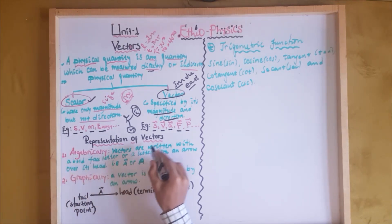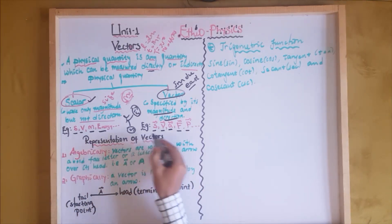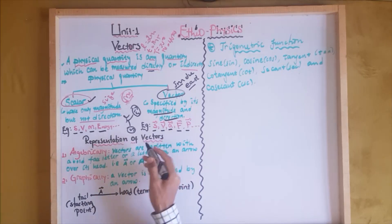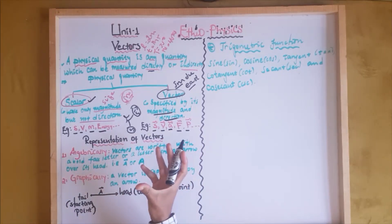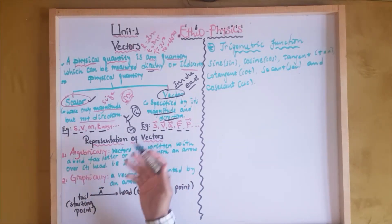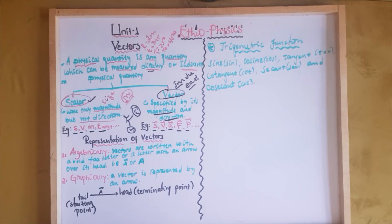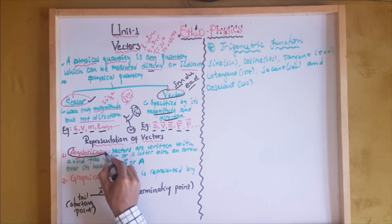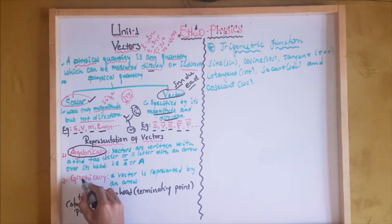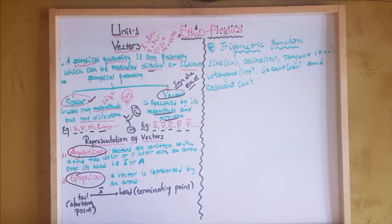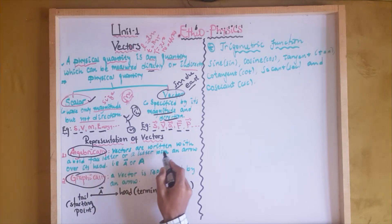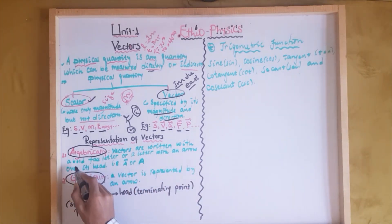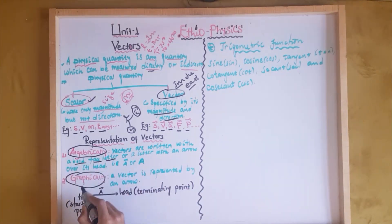Now we will talk about how we can represent vectors. We have two methods to represent vectors: the first one is the algebraic method, and the second one is the graphical method. When we use the algebraic method, vectors are written with a bold face letter.